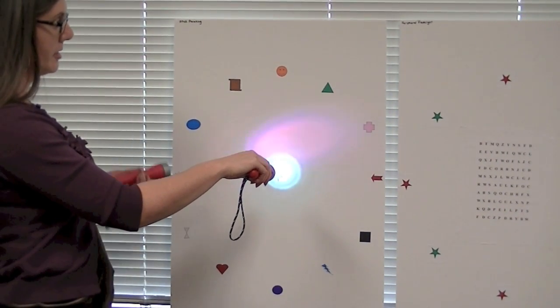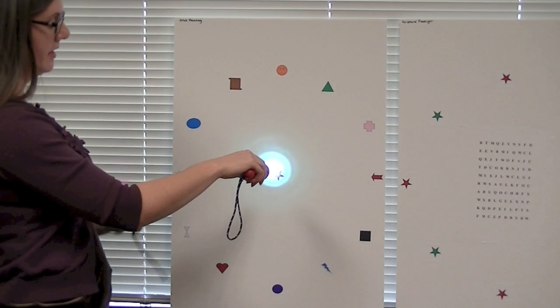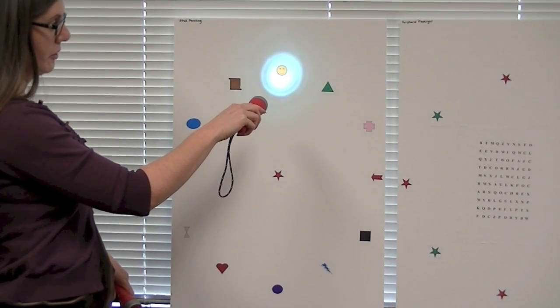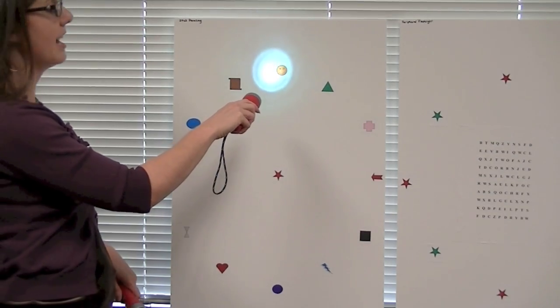And as the therapist, we will shine our lights on one of the items on the outer edges. Once they see that being shined on the outer edges, they have to show their flashlight on top of which one we flashed.